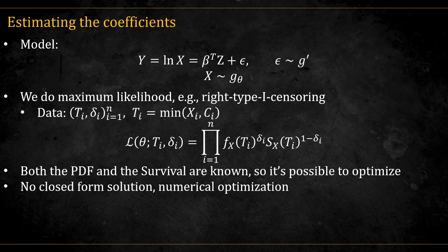The likelihood is written like this. Both the pdf and survival functions are known, and we simply need to optimize this. Unfortunately, there are no closed form solutions, and we resort to numerical optimization.